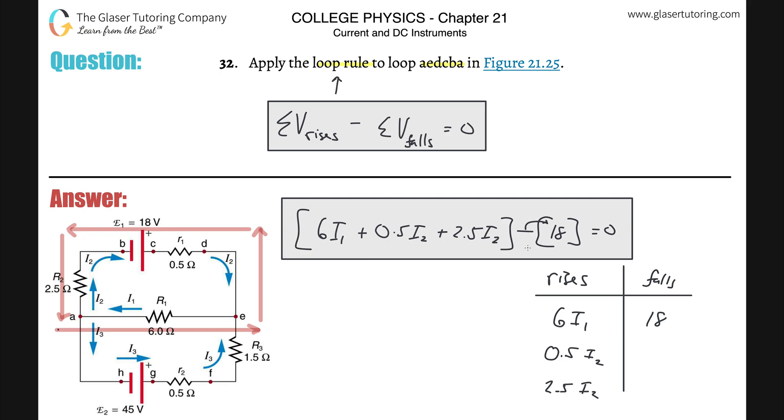Now, whether you want to distribute this negative sign and make the 18 negative or leave it minus a positive 18, that's math now. That's not physics. The physics is over. However you want to write this now in terms of signs or whatnot, it's totally up to you. But this is loop rule, and that is the answer.